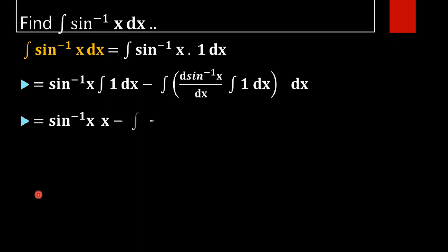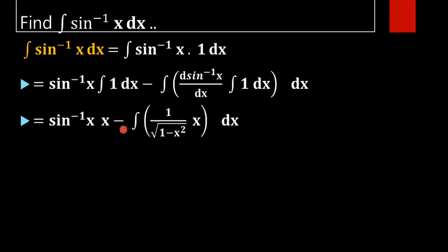In the next step, we can write sin inverse x into integral of 1 dx, which is x. And what is d by dx of sin inverse x? That is 1 by root of 1 minus x square. So the derivative of sin inverse x is 1 by root of 1 minus x square, into integral of 1 dx, which is x.